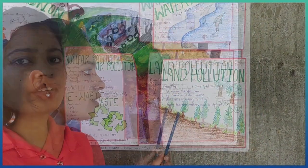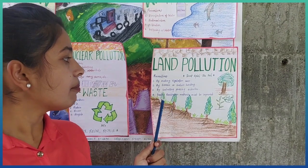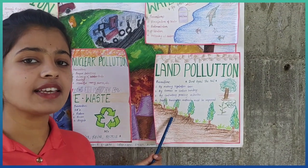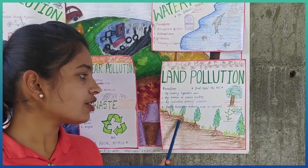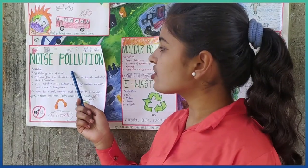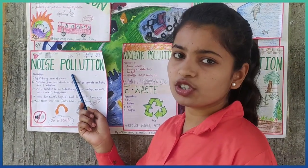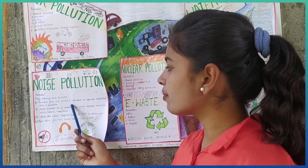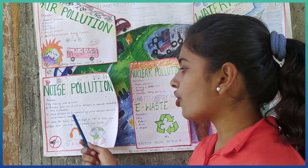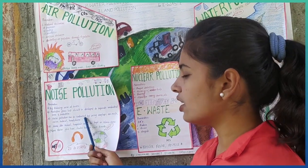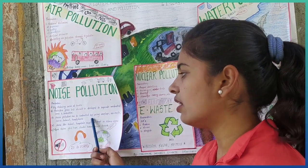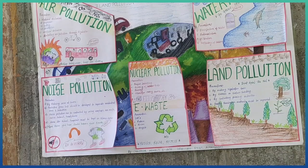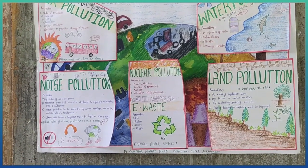Third is land pollution. The prevention of land pollution can be done by making vegetation cover, by terrace or contour wandering, by controlling grazing activities. Faulty sanitation methods must be improved. Fourth type is noise pollution. Prevention of noise pollution can be done by reducing noise at source, protective green belts should be developed to separate residential areas from industry. Noise pollution can be controlled by using earplugs, earmuffs, noise helmets, headphones, etc. Areas like school and hospital must be kept in silence zones.